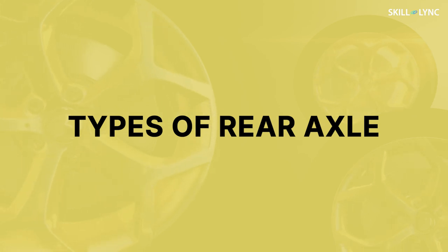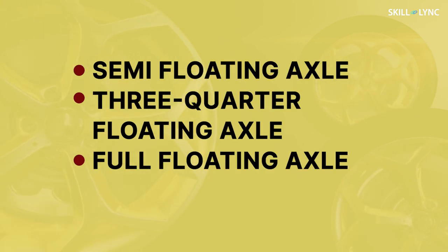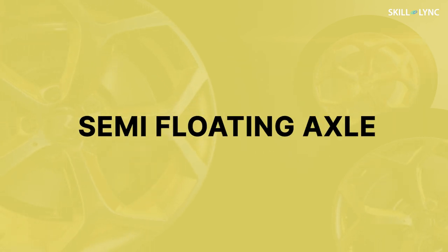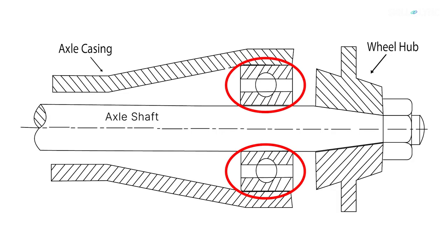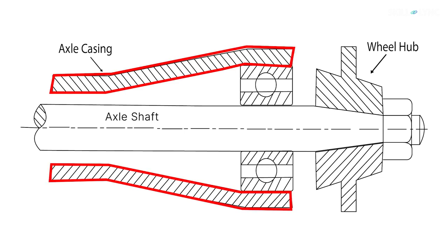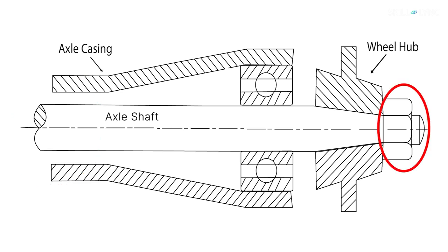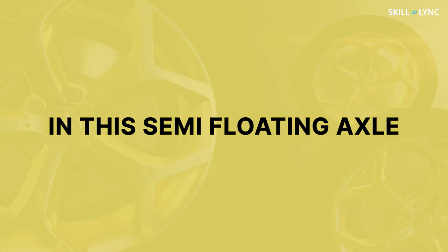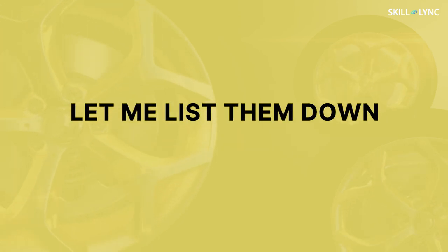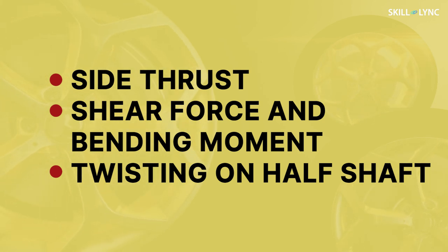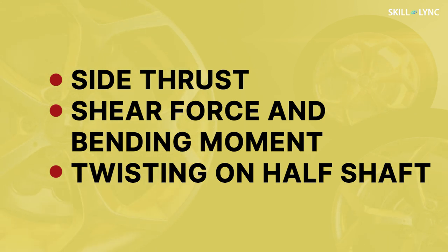Let's briefly discuss the types of rear axle. They are of three types: the semi-floating axle, the three-quarter floating axle, and the full-floating axle. The first and the commonly used type is the semi-floating axle. In this type, the bearings which support the rear axle are placed inside the casing. The whole weight of the vehicle is transmitted to the suspension, axle casing, and axle to the wheel and then to the ground. The inner end of the axle shaft is splined to the differential and the outer end is flanged to the wheels using bolts. In this semi-floating axle, various forces act on the half shaft: the side thrust acts when the vehicle is cornering, the weight of the vehicle causes shear force and bending moment, and the driving and braking torque cause twisting in them.